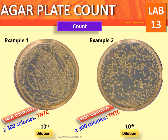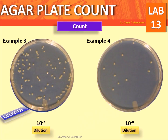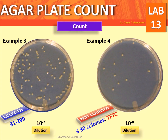Greater than 300 colonies — TNTC, not counted. The dilution 10 to the power minus 6 is also not counted — greater than 300 colonies, TNTC. The dilution 10 to the power minus 7 is counted, ranging between 31 to 299 CFU. The dilution 10 to the power minus 8 is not counted — less than 30 colonies, TFTC.